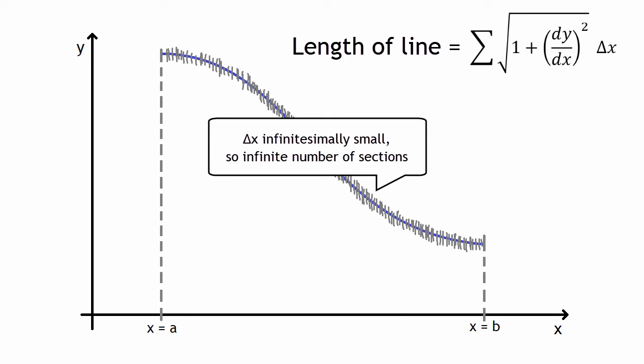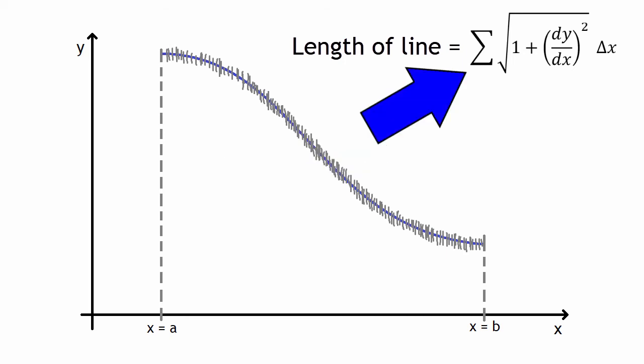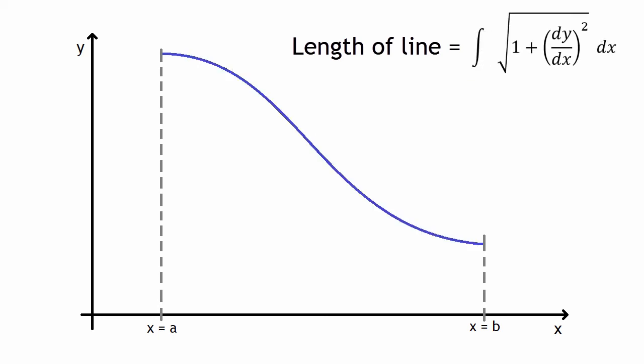This sum could be turned into an integral looking like this. Delta x changes to dx to represent a really small length. And because you want to find the length of the line from a to b, the limits of this integration will be from a to b as well.